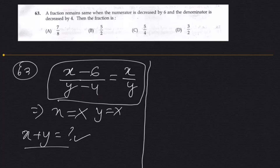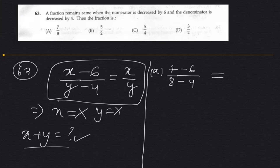So what we do in this situation is try each option directly. For example, option A: 7 by 8. If the numerator is decreased by 6 and the denominator is decreased by 4, is it equal to the fraction? 7 minus 6 over 8 minus 4 is 1 by 4, which is not equal to 7 by 8. So option A is not the answer.